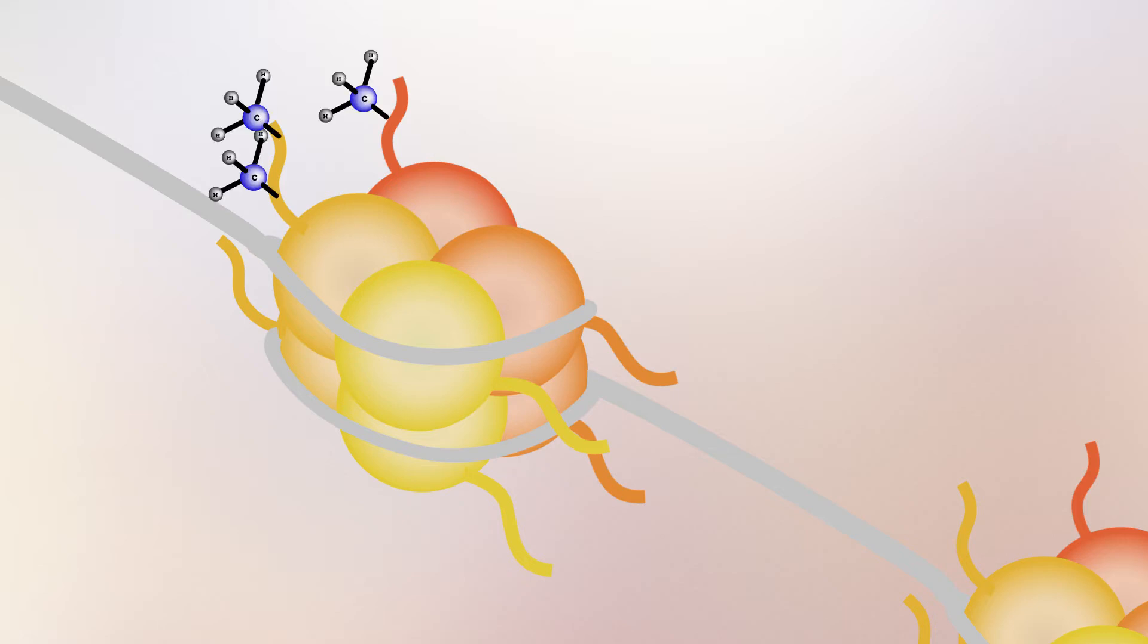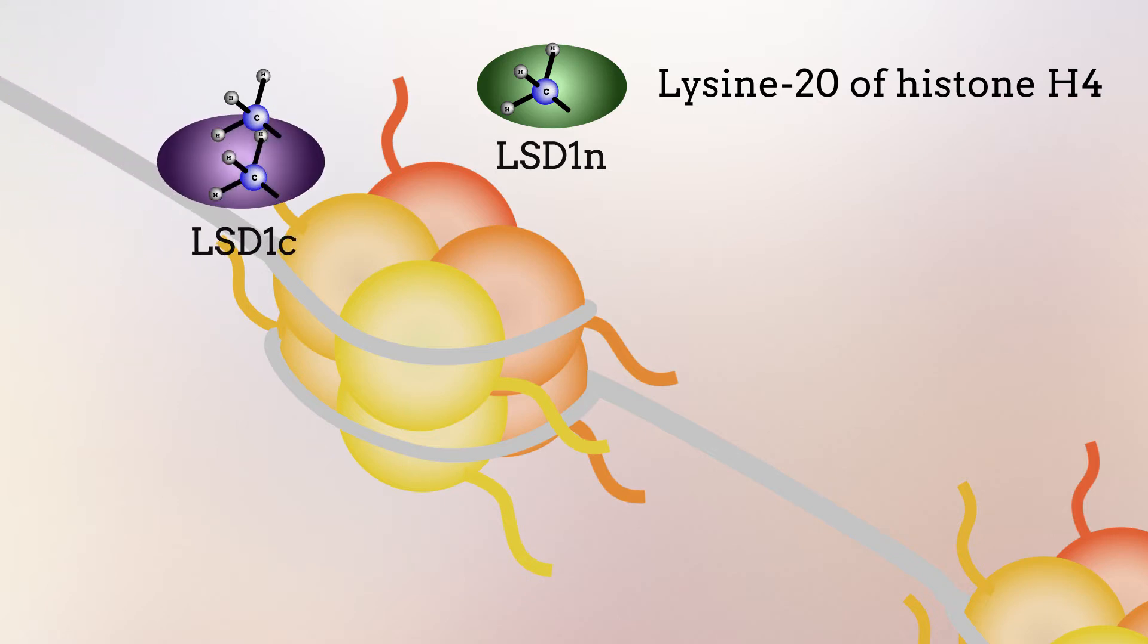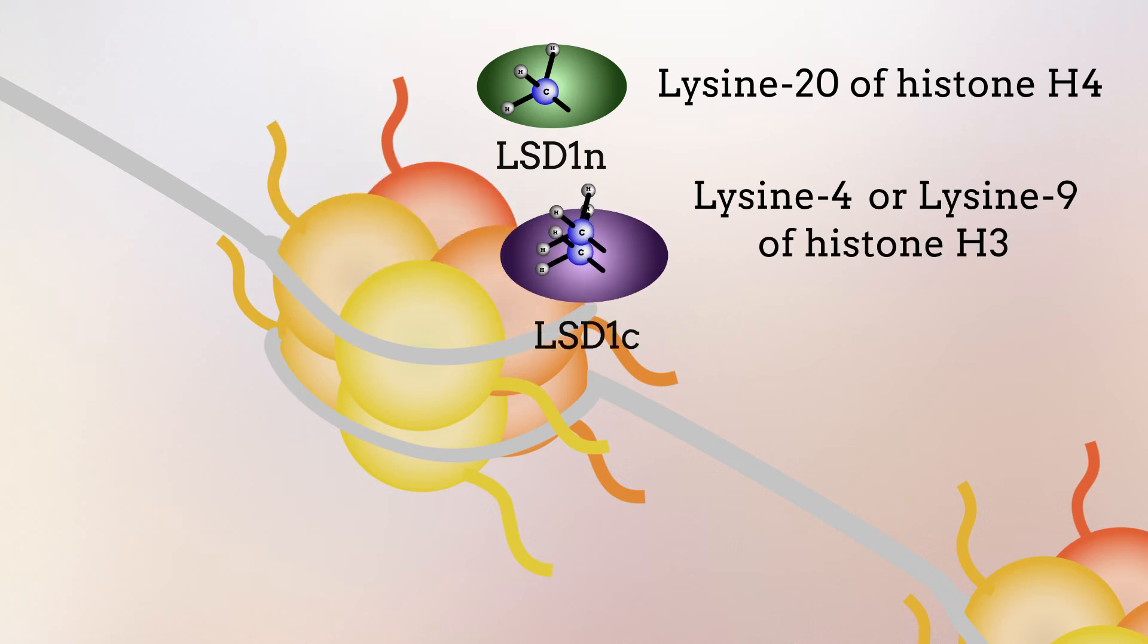Interestingly, the authors showed that LSD1N removes methyl groups from lysine 20 on histone H4, in contrast to LSD1C, which targets methyl groups on lysine 4 or lysine 9 of histone H3.